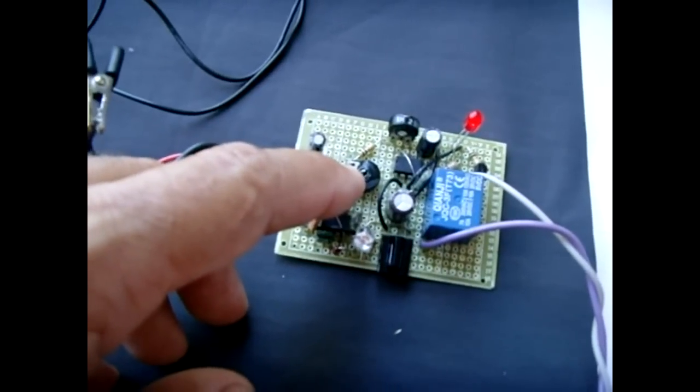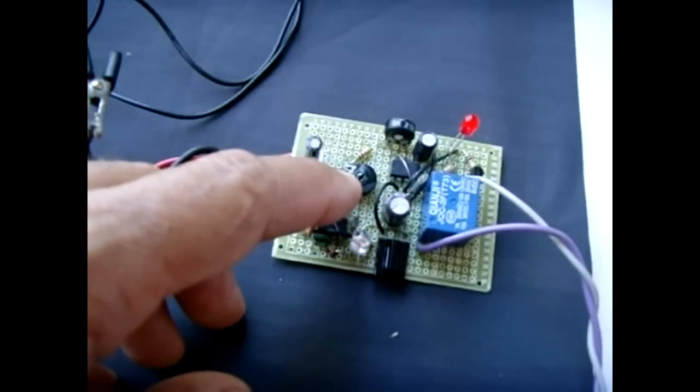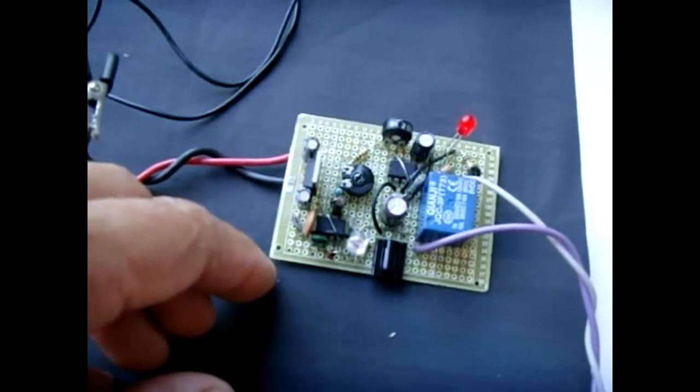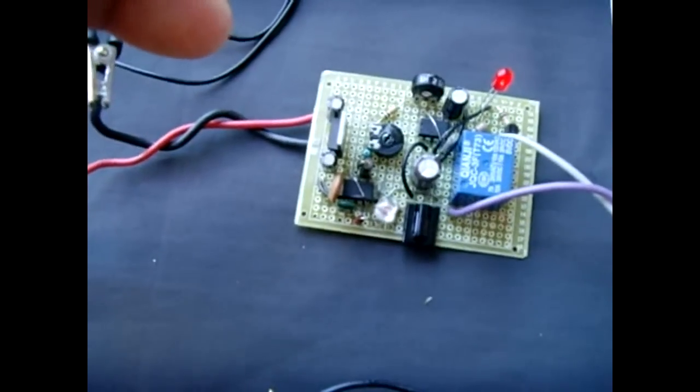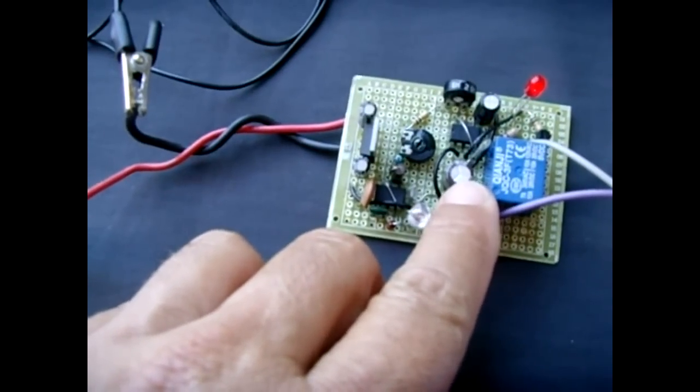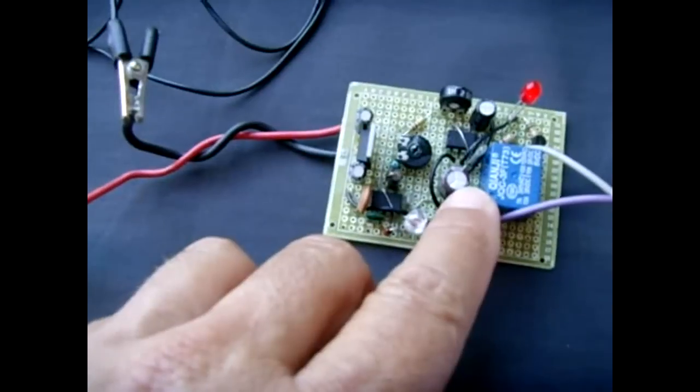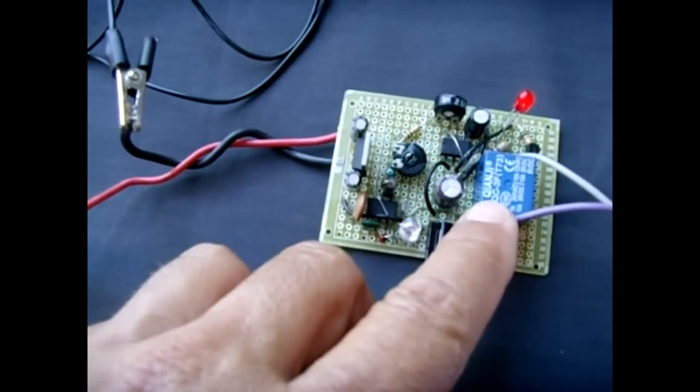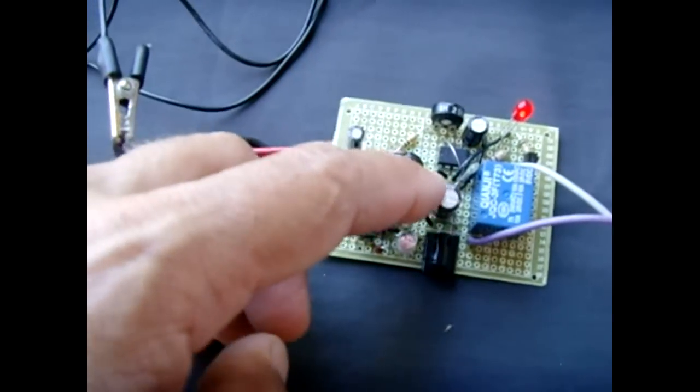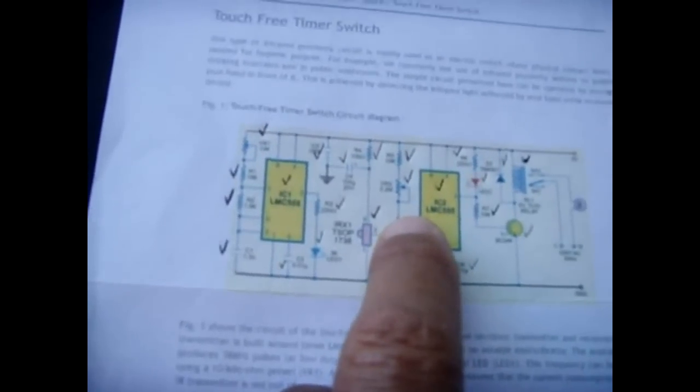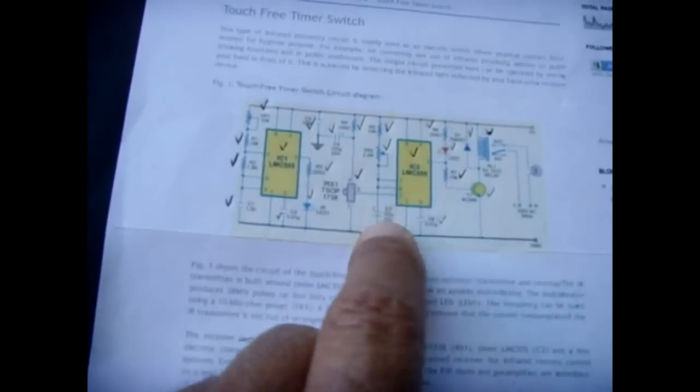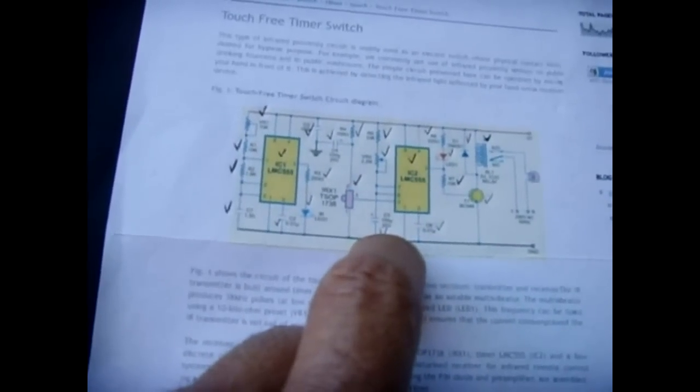This circuit calls for a 2.2 meg potentiometer. I only had a 1 meg, and with that 1 meg I'm able to run from one second to two and a half minutes. If you'd like more run time, all you have to do is change the value from 100 and make it higher. You can make it like 1,000 and it would run a long time, several minutes. If you adjust this to a really high value, you could probably get an hour or more. So just play with the values of VR2, which is right there, and C5. Increase either one or both to get more run time.